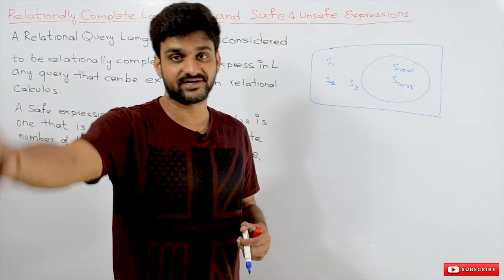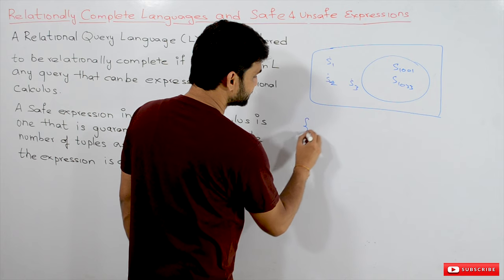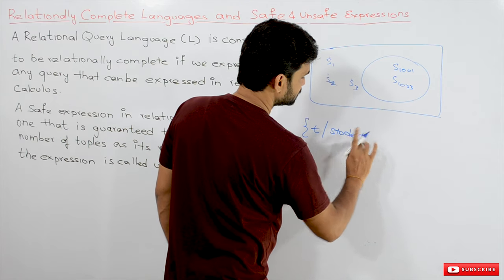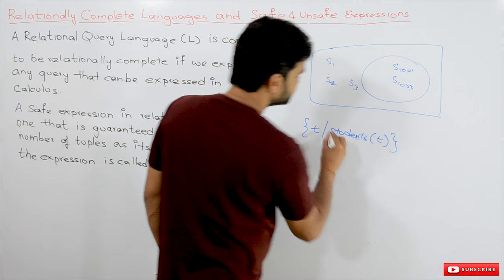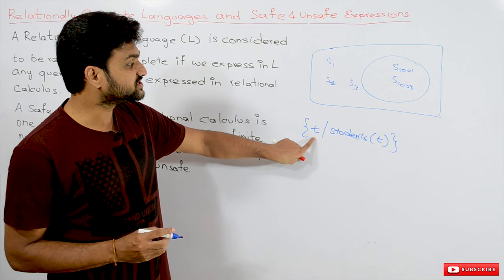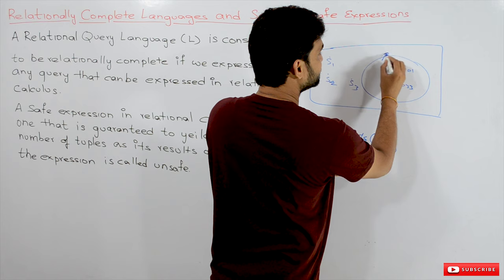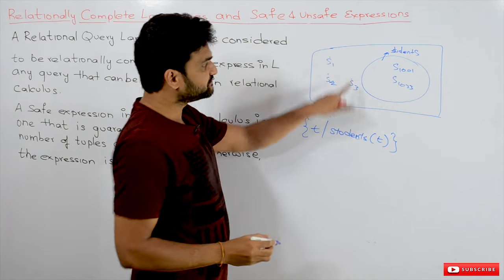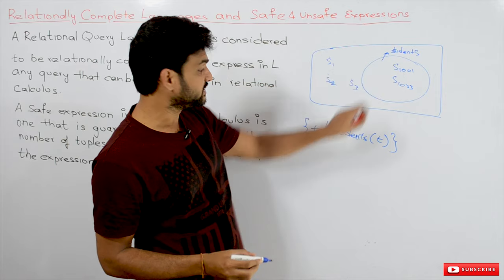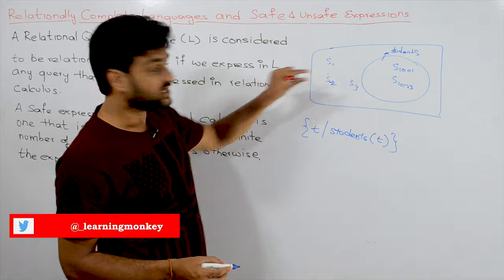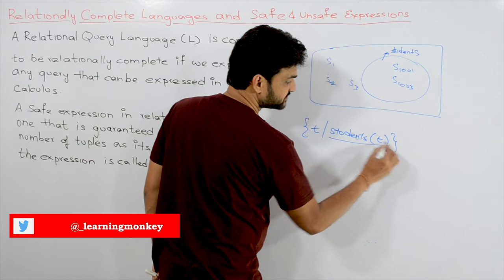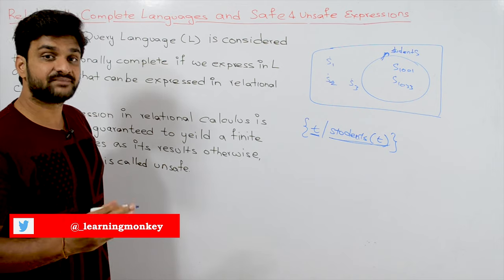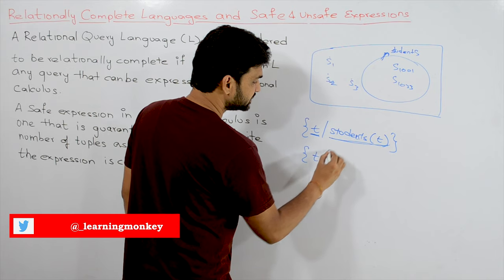For example, take the relational expression: { t | students(t) }. This means t is a tuple taken from the students table. This is our database within the universe of discourse. From the universe of discourse we collect only a finite number of students. So if you take a tuple, that tuple should belong to the students database.